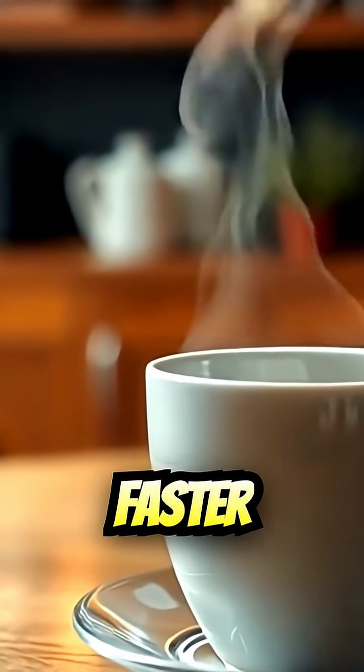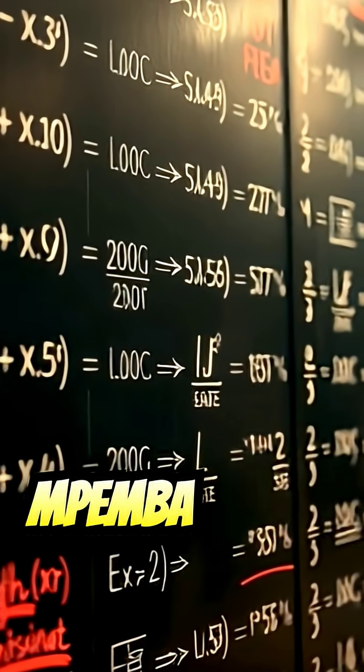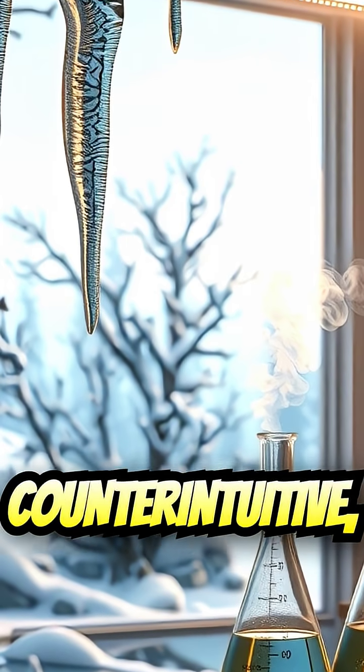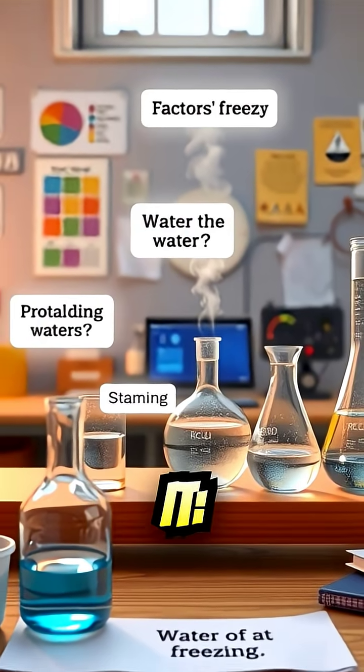The phenomenon of hot water freezing faster than cold water is called the Mpemba effect, named after a Tanzanian student, Erasto Mpemba, who noticed it in 1963. It's surprisingly counterintuitive, but several factors might explain it.